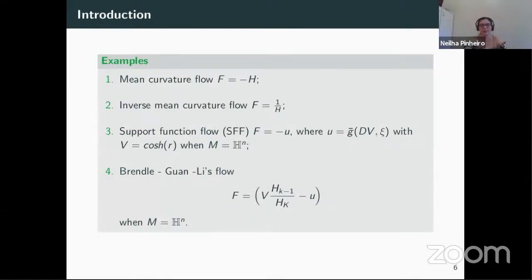Here are some examples of geometric flows. The first one is the mean curvature flow, the second one is the inverse mean curvature flow, the next one is the support function flow, where F is given by minus u, and u is the inner product between the gradient of v and the unit vector xi, with v as the hyperbolic cosine function, where the ambient space is the hyperbolic space. The last example is another one of this flow, where the ambient space is also the hyperbolic space.